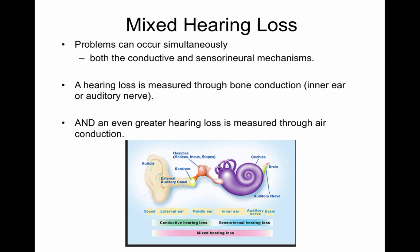With a mixed hearing loss, you have a problem occurring in the outer portion and the inner portion — so it's got a problem in both areas. Your air conduction scores are very bad and your bone conduction scores are bad. Your air conduction scores come across two problems: a problem in the conductive mechanism and a problem in the sensorineural mechanism, that's why they're very bad. Your bone conduction scores are abnormal because of the cochlea — there's one problem in that sensorineural mechanism. So mixed hearing loss has two problems: a problem in the conductive area and a problem in the sensorineural area.